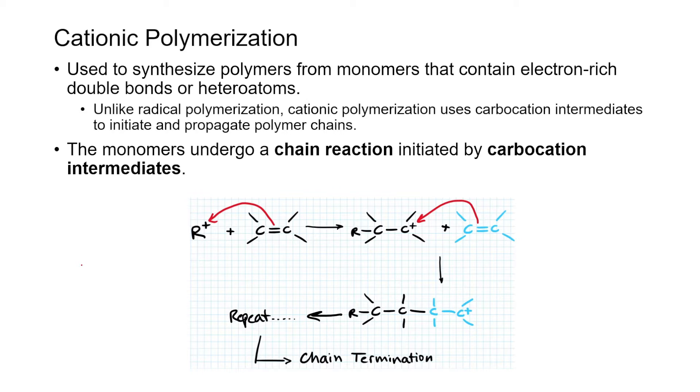Now, unlike radical polymerization, which involves the formation of free radicals, cationic polymerization relies on the generation of a carbocation intermediate to initiate and propagate the polymer chains.